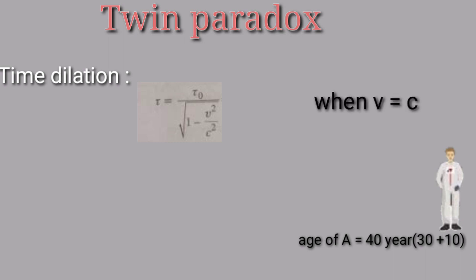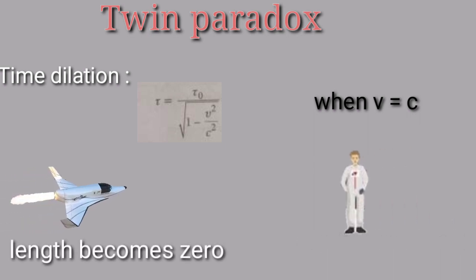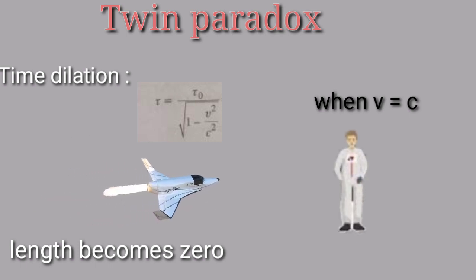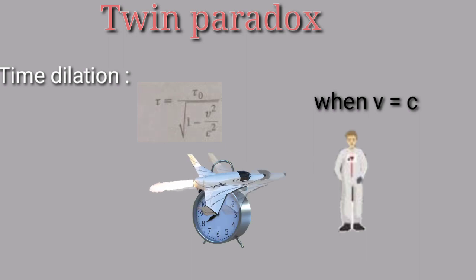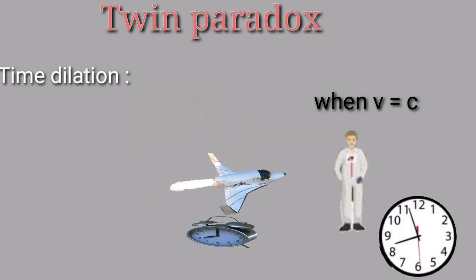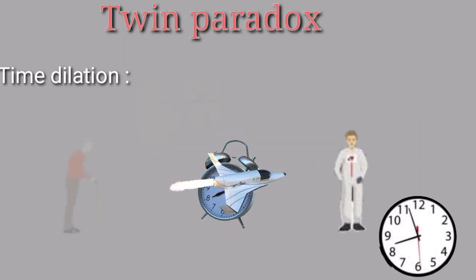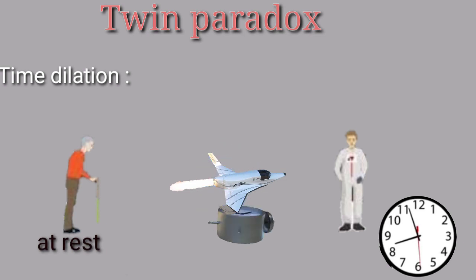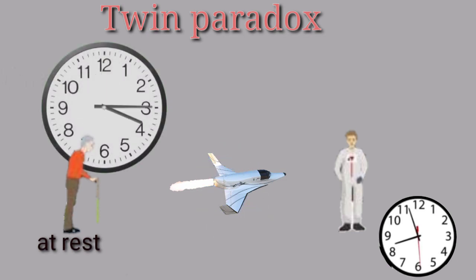If we use the time dilation and length contraction equations, we find out that at the speed of light, the length becomes 0. That means there is no distance between two points in space. And time becomes infinite with respect to some other observer who is at rest. So length becomes negligible and time becomes infinite.